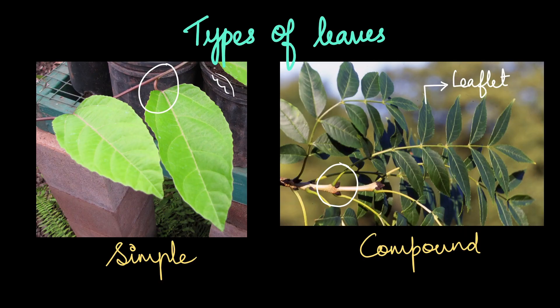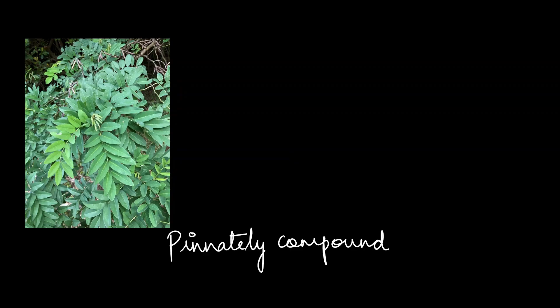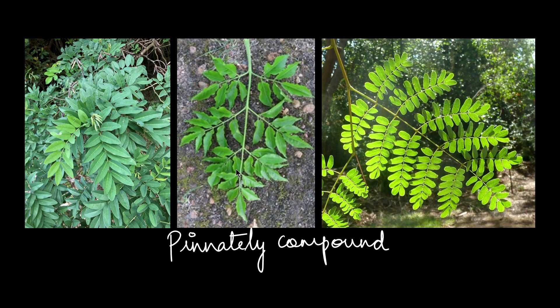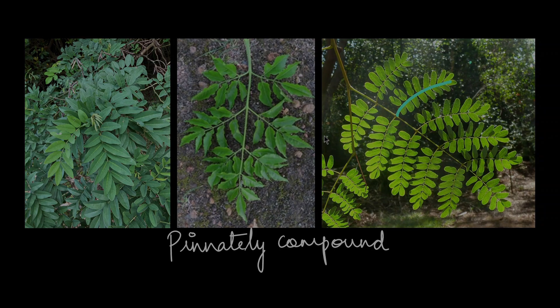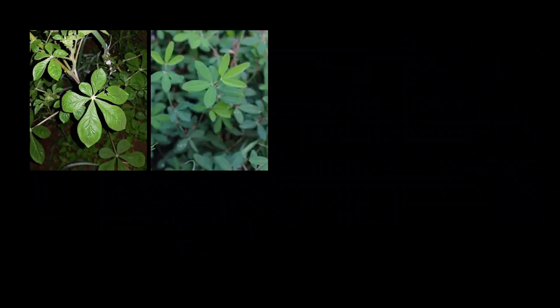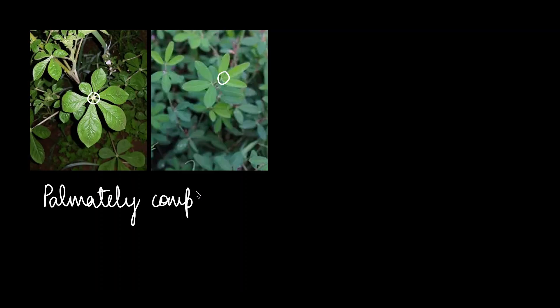The compound leaves have different varieties. The first is called pinnately compound. In pinnately compound leaves, there is a common axis called the rachis, and the leaves are arranged on either side of the rachis — the rachis being basically the midrib of a pinnately compound leaf. The other variety is called the palmately compound leaf. Here the leaflets all attach at a single common point. The number of leaflets doesn't matter; the point of attachment is what is important.